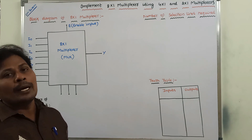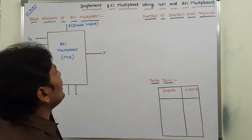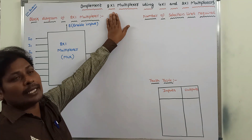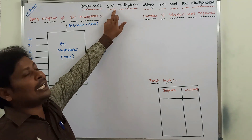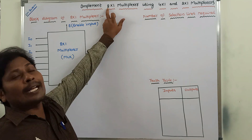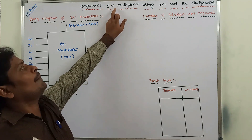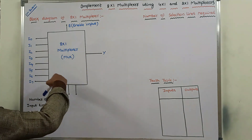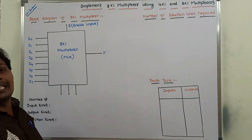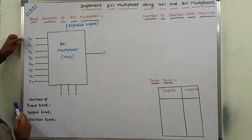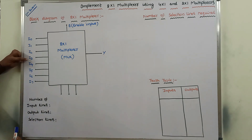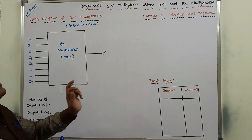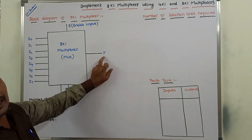Here the required multiplexer is the 8 by 1 multiplexer. In an 8 by 1 multiplexer, the number of input lines is 8 and the number of output lines is 1. This is the block diagram of the 8 by 1 multiplexer. The 8 inputs are I0, I1, I2, I3, I4, I5, I6, I7, and it produces only one output, that is Y.